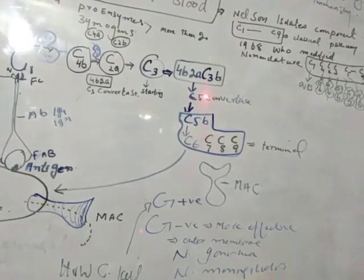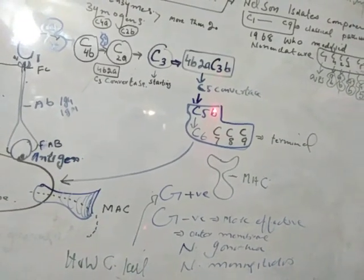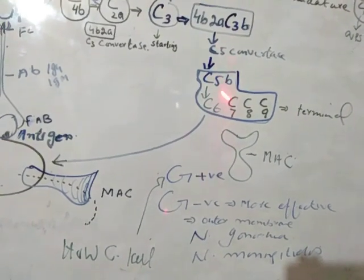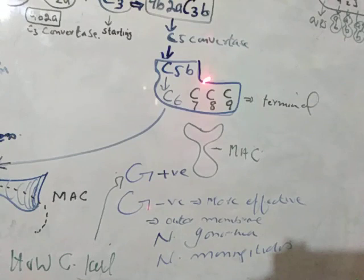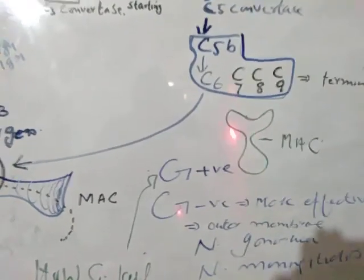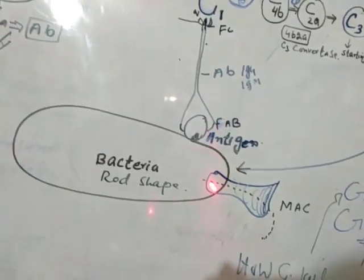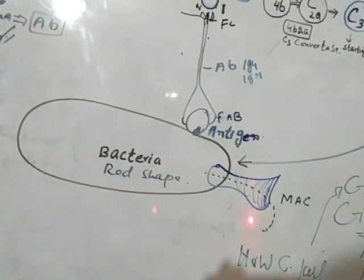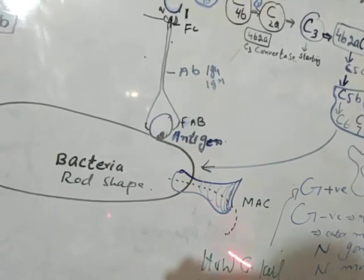The complex C4B2A plus C3B is called C5 convertase. This C5 convertase activates C5 — C5A is released and C5B remains. C5B then sequentially activates C6, C7, C8, and C9. This is called the terminal complex — C5B, C6, C7, C8, C9 — and together they form what is called the Membrane Attack Complex, or MAC. The MAC forms pores in the bacterial cell wall like a drill, water enters, and the bacteria is killed.